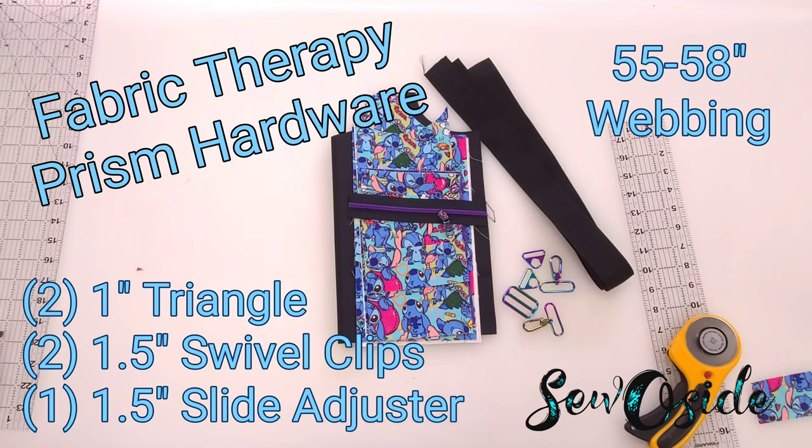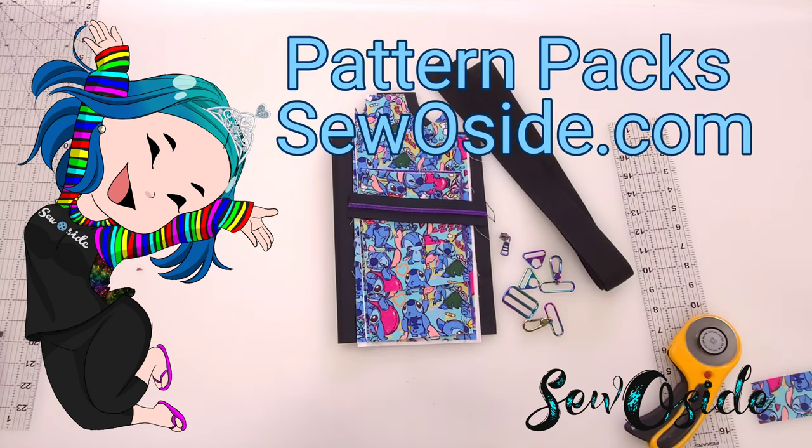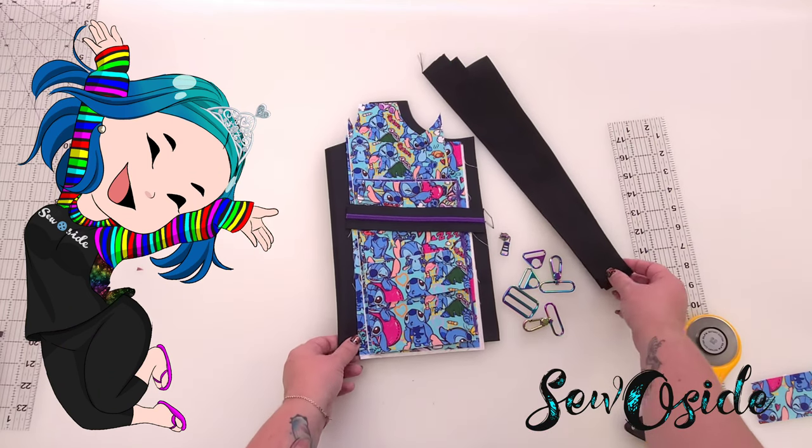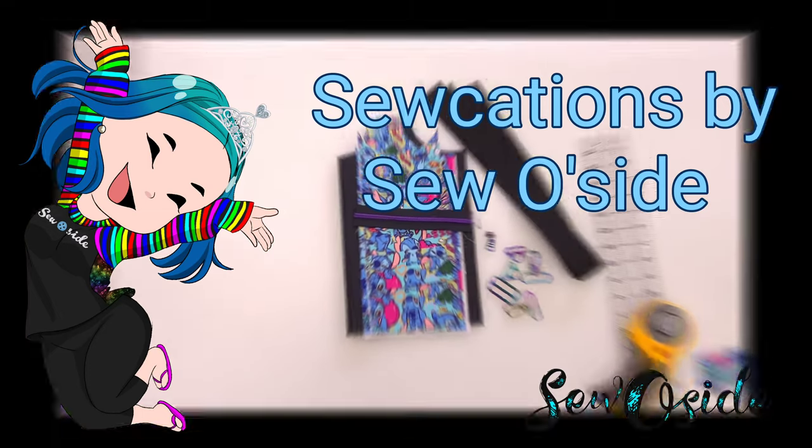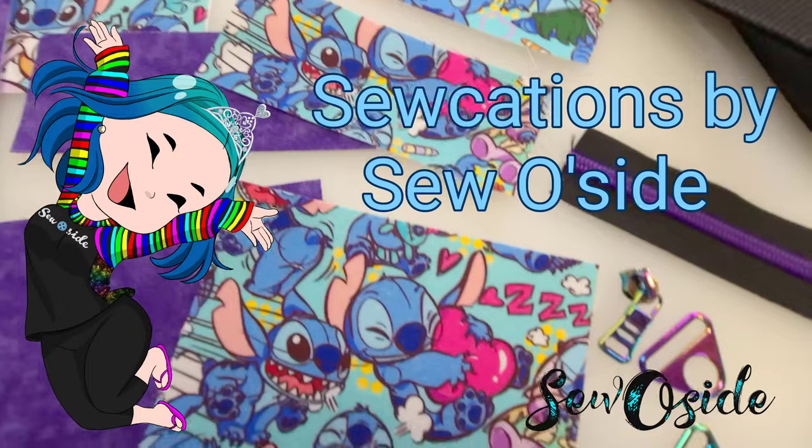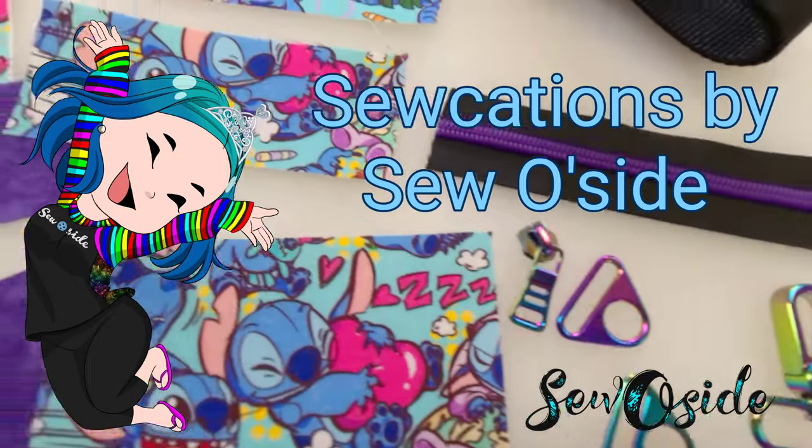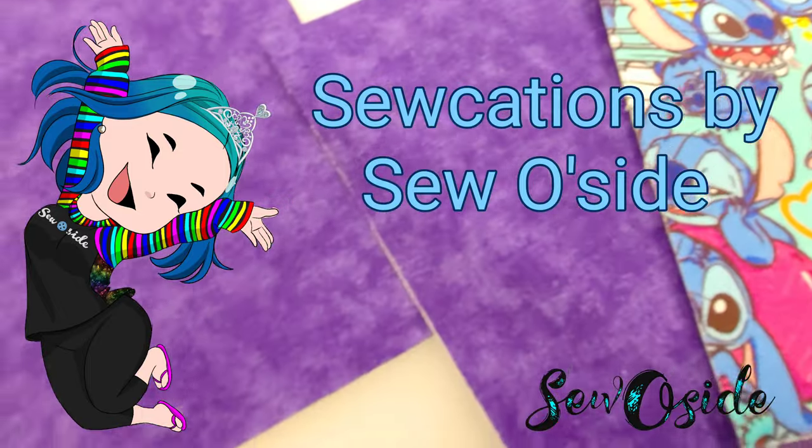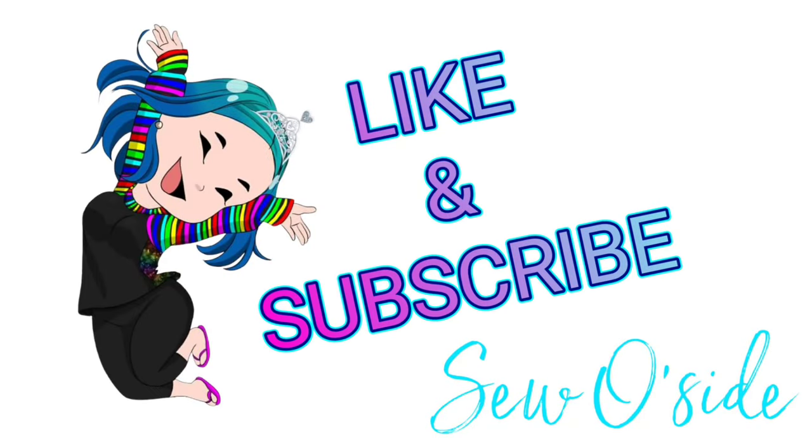So all of this you can find in the original pattern as well. I will go ahead and link Fabric Therapy for their prism hardware here in the description. Zipper pulls you can get all over the place. Don't forget our pattern packs are going to be up on the website here very soon, even for the hack. The original pattern is up, but the hack is coming. So you can see everything here. It's all nice and cut. You guys have an absolute blast with this. I'm so excited to see everybody make these. Please join our Facebook group, Sewcations by SewOside. By all means, ask questions, give me a shout out, join our group, show your pictures, show your makes. I'm really excited to see you guys do this. All right. Until next time. See you later.